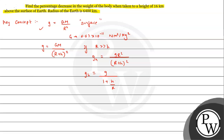Since R is much much greater than h, we apply the binomial expansion by shifting the term to the numerator and expanding, giving us the result: g_h = g(1 − 2h/R). This is the key formula for acceleration due to gravity at height h that we need to keep in mind.